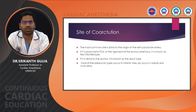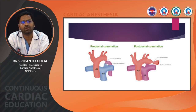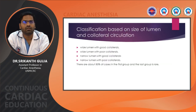The most common site of coarctation is distal to the origin of the left subclavian artery. If proximal to the PDA or ligament of ductus, it is known as infantile type; if distal to the ductus, it is known as adult type. Classification is also based on size of lumen and collateral circulation: wide lumen with good collaterals, wide lumen with poor collaterals, narrow lumen with good collaterals, and narrow lumen with poor collaterals. 80% of cases fall in the first group.